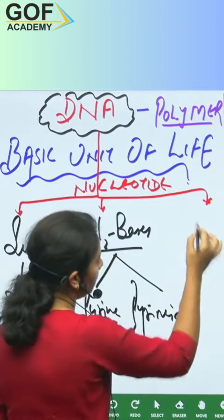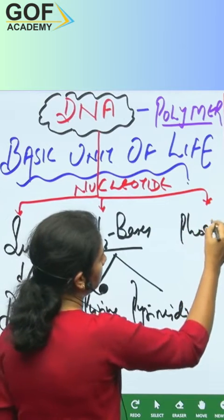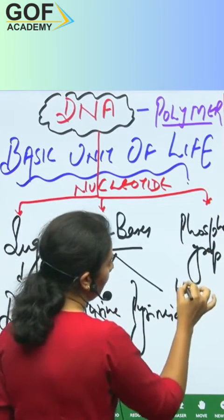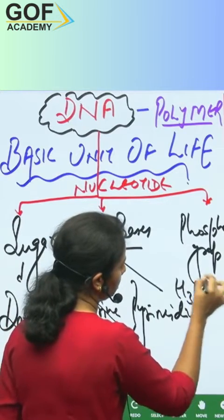And number three: the phosphate group, which we get from H3PO4, that is phosphoric acid.